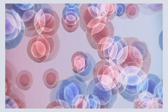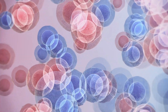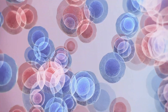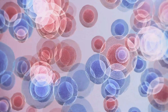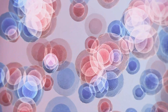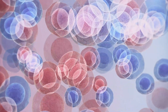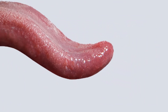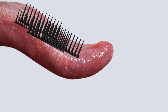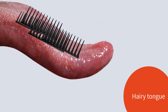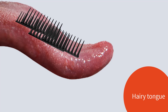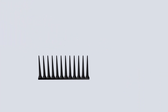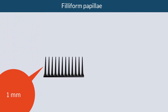Cells in the human body grow, multiply, die at some point, and eventually are removed from the body. The same happens with the tongue papillae as well. Hairy tongue results when the filiform papillae on your tongue are not removed or shed as they should. The filiform papillae are about 1 mm in length, and they are the most numerous papillae in the tongue.